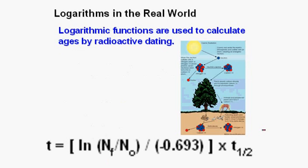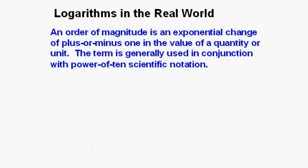Logarithmic functions are used to calculate ages by radioactive dating. An order of magnitude is an exponential change of plus or minus one in the value of a quantity or unit. The term is generally used in conjunction with power of 10 scientific notation.